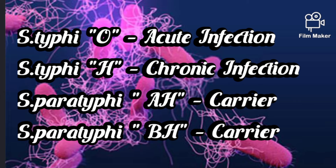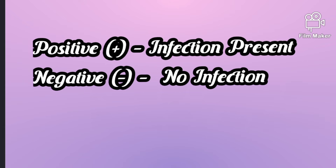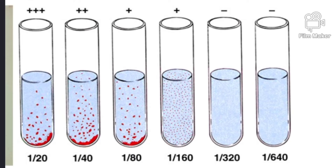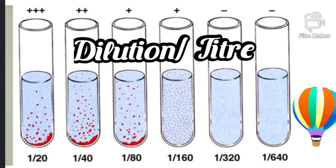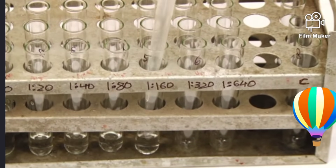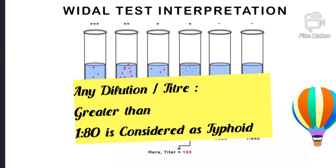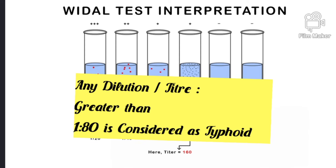In the Widal test report we also see positive and negative. Positive means the person has typhoid; negative means the person is not infected with typhoid. We also see certain dilution values like 1:20, 1:40, 1:80, 1:160, 1:320 — these are called titers. The higher the dilution, the higher the infection. Generally, up to 1:80 does not indicate typhoid. Any titer greater than 1:80 is considered positive for typhoid according to the recent scenario.